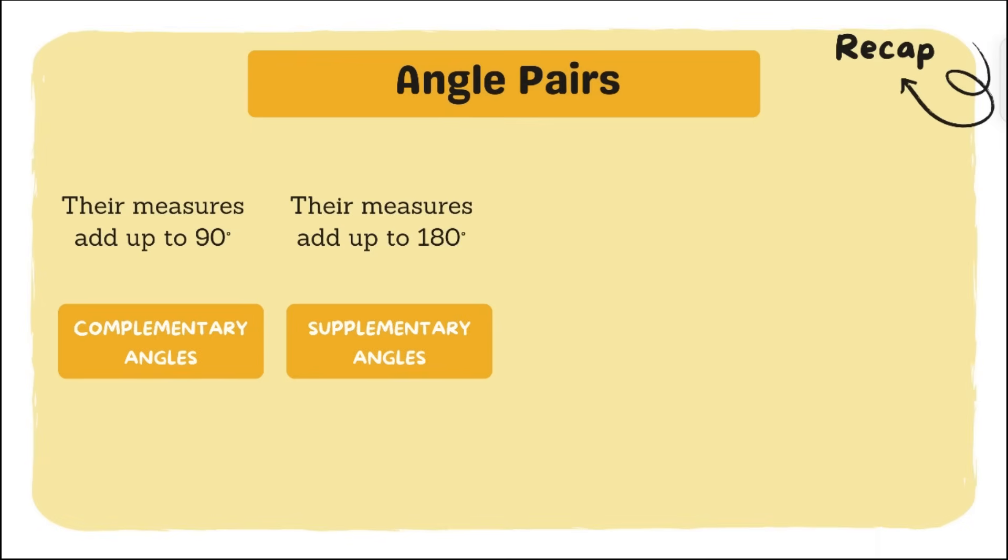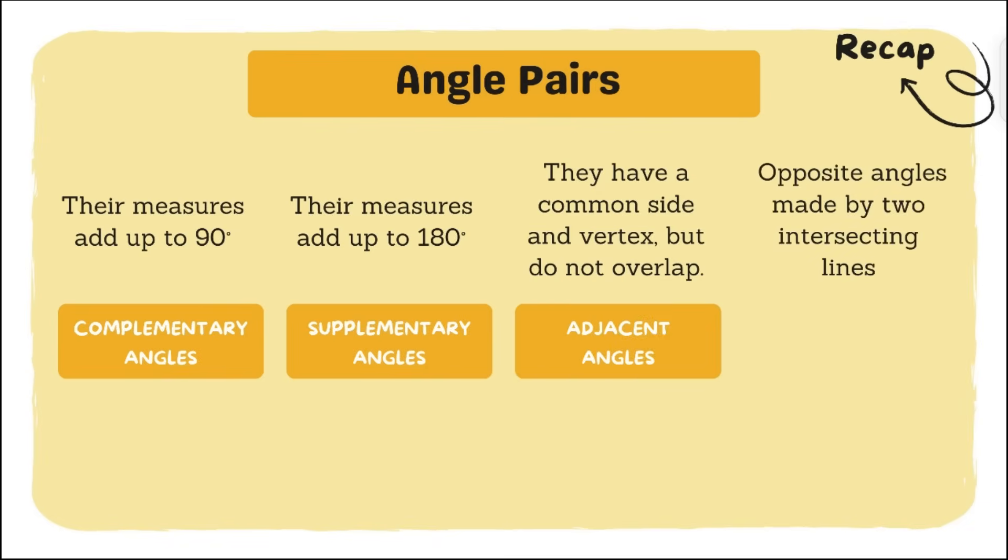Next, they have a common side and a common vertex but do not overlap. We call them the adjacent angles. Next, these are angle pairs that are opposite and are made by two intersecting lines. They are called the vertical angles. Vertical angles are also what we call congruent angles.